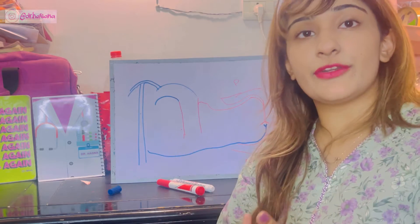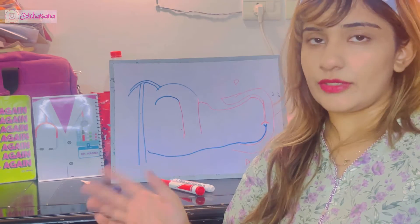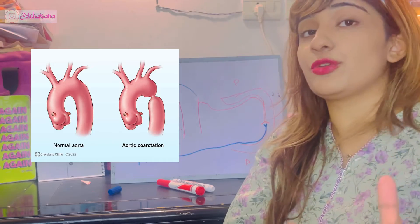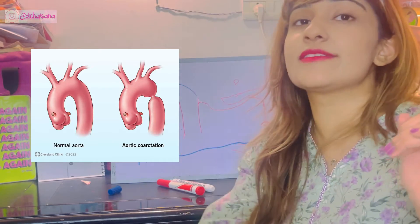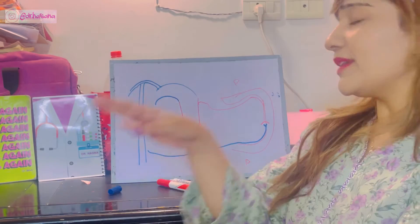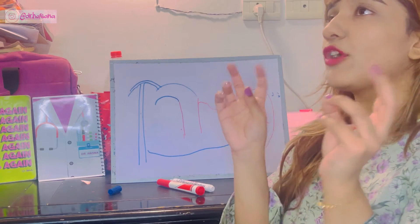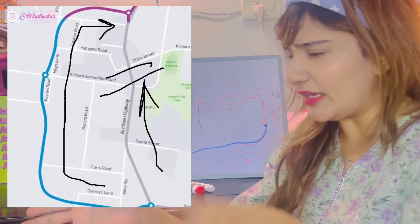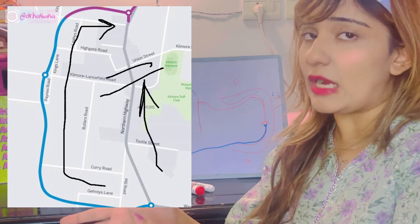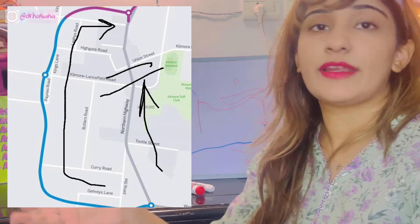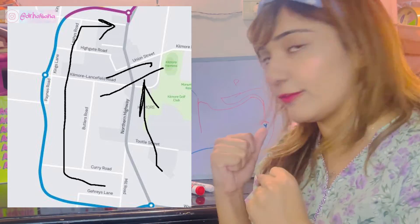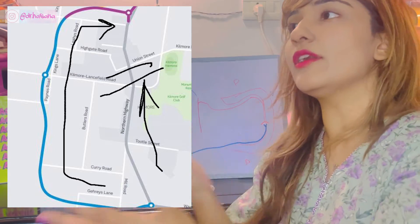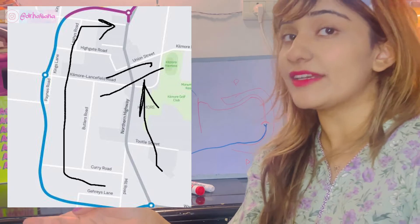Now let's talk about the coarctation of the aorta, which is also known as narrowing of this vessel. I want you to remember the concept of collateral circulation — if one path is not working, you take another way to reach your destination. You wouldn't waste time waiting for traffic to clear; you'd take a longer route but still get there on time.